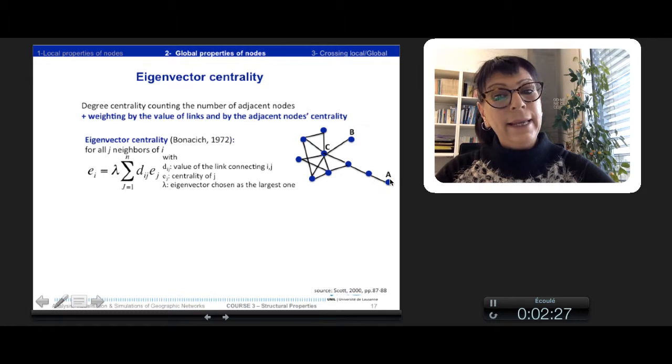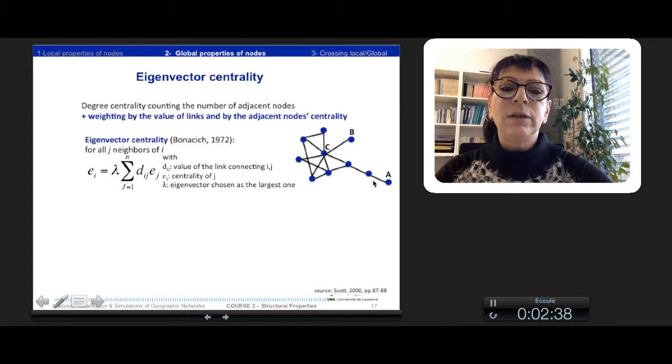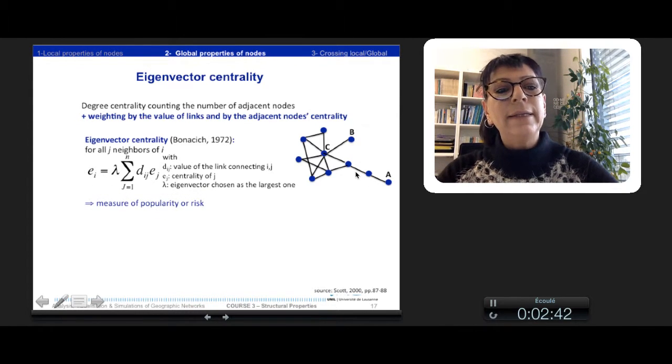In the opposite, A has the same degree as B, but does not have a high eigenvector centrality as it is connected to a node which is not very connected. This eigenvector centrality allows measuring of popularity or risk in a network.